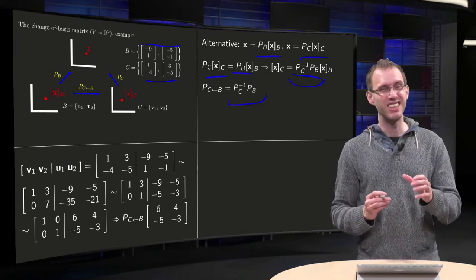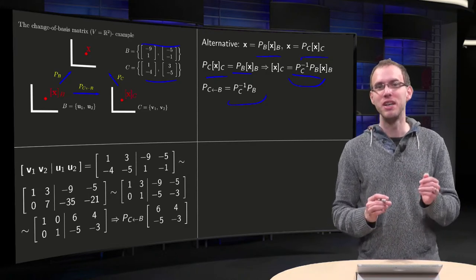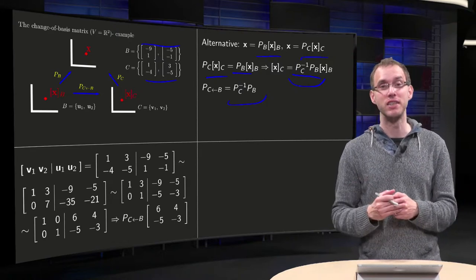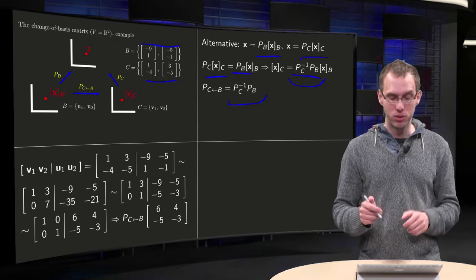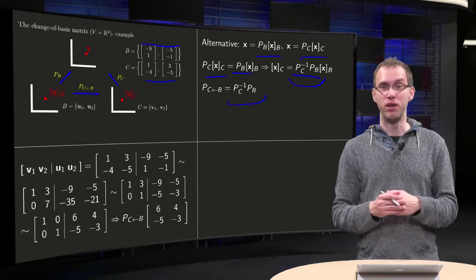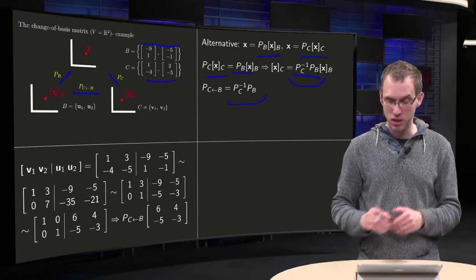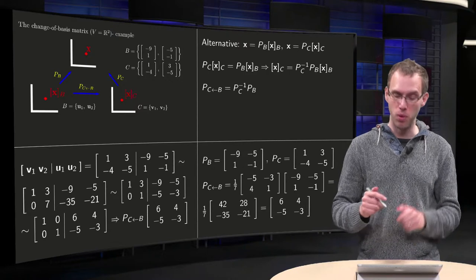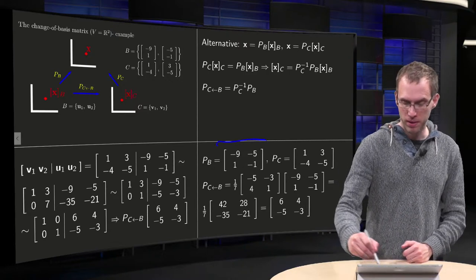Well, in practice, you don't really want to do this, because it requires the inverse of a matrix, which is usually not so nice. So, in practice, you often use this first method. However, if you are in a 2 by 2 case, you can also use this inverse, because the inverse of a 2 by 2 matrix is no problem, it's small. We know PB and PC.